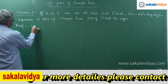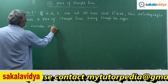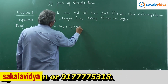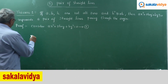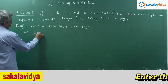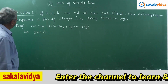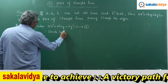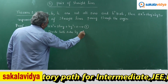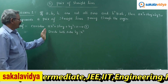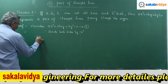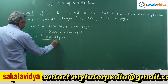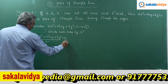Consider ax squared plus 2hxy plus by squared equal to 0 — call this equation 1. Let us divide both sides of this equation by x squared. So ax squared over x squared plus 2hxy over x squared plus by squared over x squared equals 0.